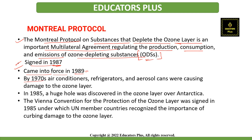By the late 1970s, scientists were able to prove that certain chemical substances used in air conditioners, refrigerators, or aerosols were causing damage to the ozone layer. And in 1985, they discovered a huge hole in the ozone layer over Antarctica, called an ozone hole.